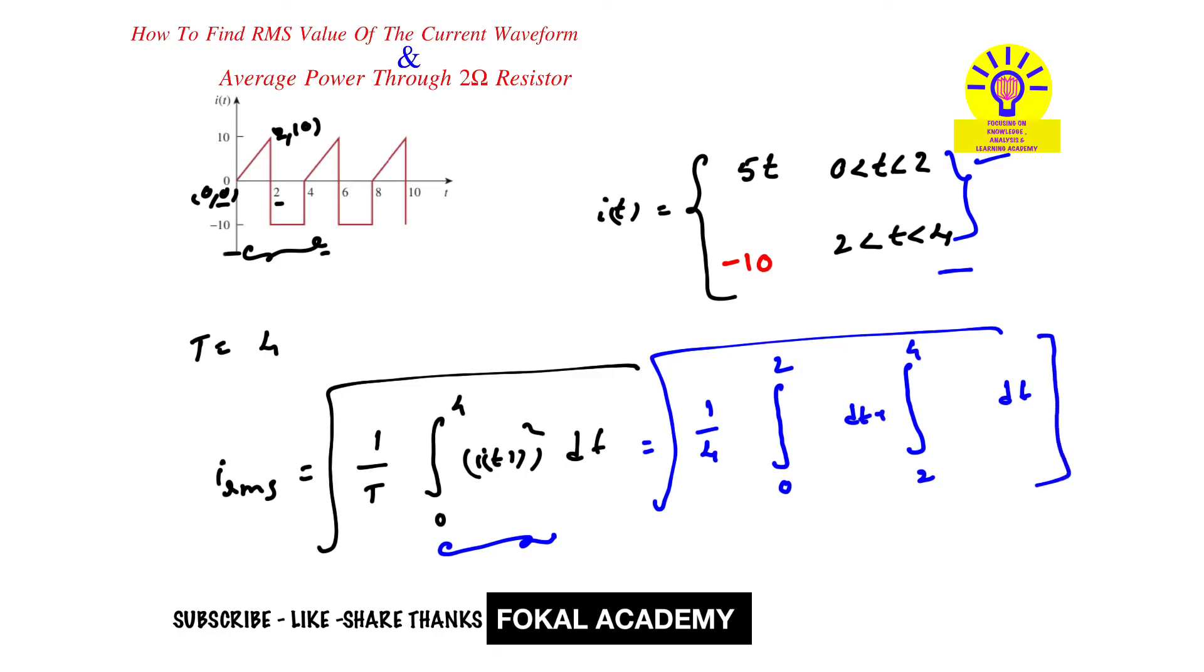Now here in the limits 0 to 2, we have i(t) is 5t, here 5t square. And here from 2 to 4, the i(t) is minus 10, means minus 10 square. By simplifying this, we will get i_rms equal to 8.165 amperes.